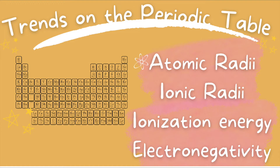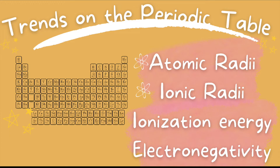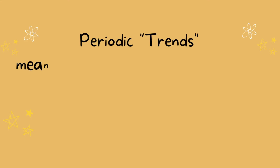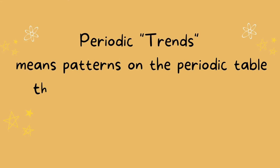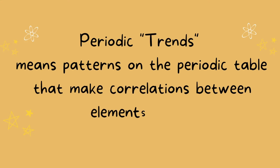Atomic radii, ionic radii, ionization energy, and electronegativity. Periodic trends refer to various patterns seen on the periodic table that help us visualize correlations of the elements.